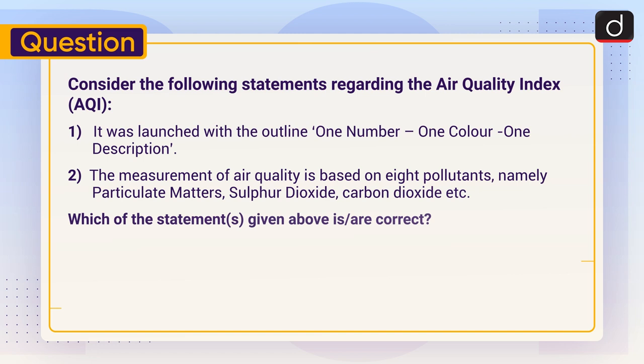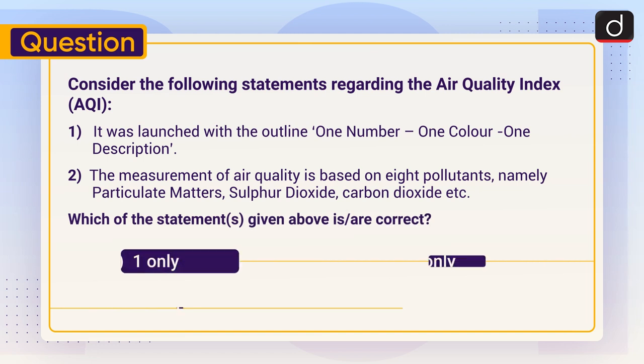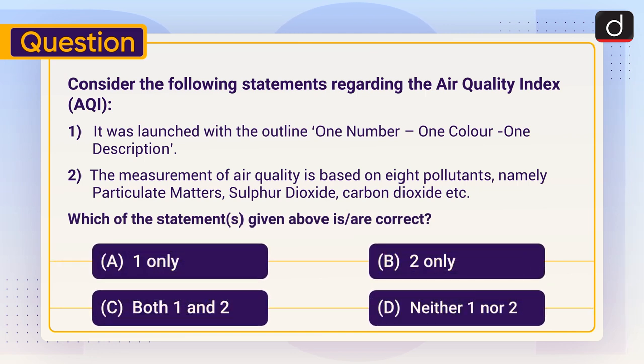Now it's time for the practice question. Consider the following statements regarding AQI: (1) It was launched with the outline — one number, one color, one description. (2) The measurement of air quality is based on eight pollutants, namely particulate matter, sulfur dioxide, carbon dioxide, etc. Which of the statements given above is or are correct? (A) One only, (B) Two only, (C) Both one and two, or (D) Neither one nor two. Send your answer in the comment section.